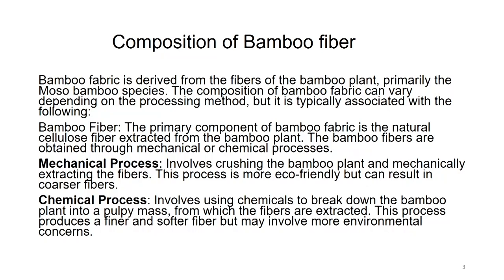The mechanical process involves crushing the bamboo plant and mechanically extracting the fibers. This process is more eco-friendly but can result in coarser fibers. Chemical processing involves using chemicals to break down the bamboo plant into a pulpy mass from which the fibers are extracted. This process produces a finer and softer fiber but may involve more environmental concern because the chemical process is somewhat harsh.